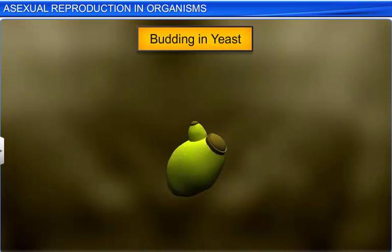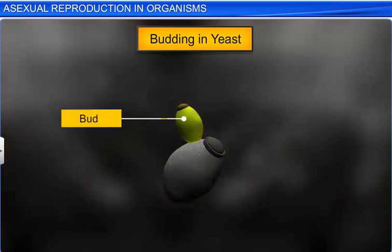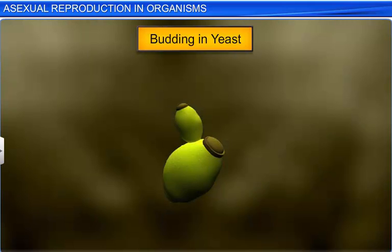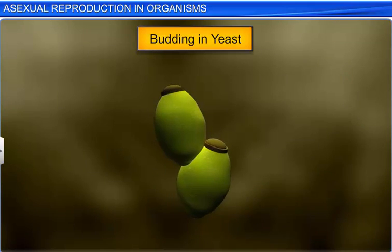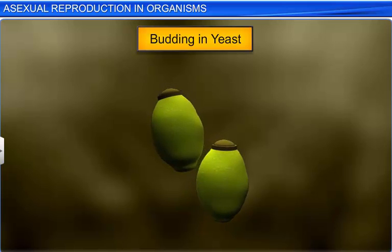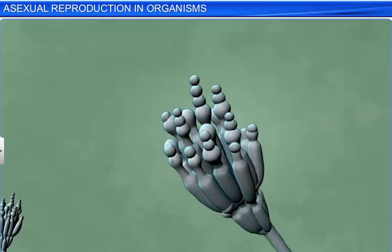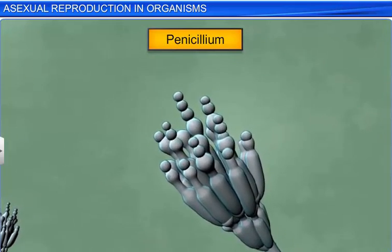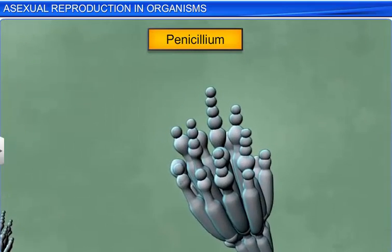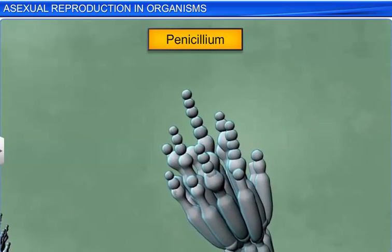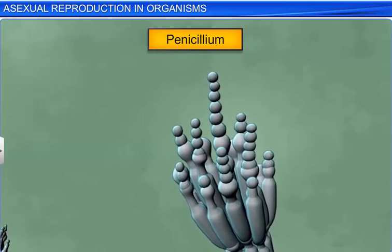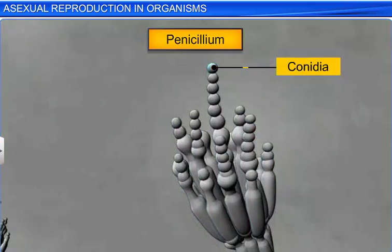Yeast, on the other hand, reproduces through budding, where the parent cell produces small buds through mitosis. These buds initially remain attached to the parent cell and then separate to develop into new organisms. While yeast reproduces through budding, other members of the fungi kingdom, such as Penicillium, reproduce through conidia, a special asexual reproductive structure.